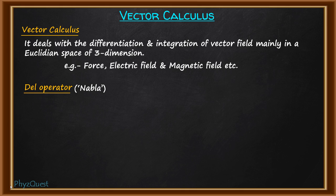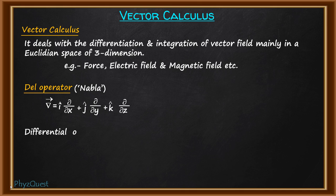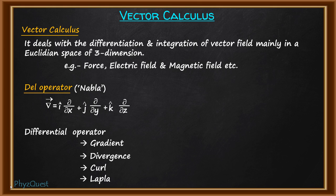The representation of the del operator is the vector delta, which is equal to i-cap ∂/∂x plus j-cap ∂/∂y plus k-cap ∂/∂z. There are four basic differential operators based on this del operator: gradient, divergence, curl, and Laplacian.